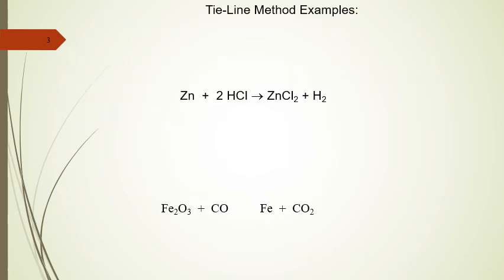We're now going to begin looking at a few different examples, and the first type of method we're going to use is the oxidation number change method or the tie line method. We have a reaction where zinc and hydrochloric acid produce zinc chloride and hydrogen gas — a single replacement reaction, which is always a redox process. Looking at our tie line, zinc is going to undergo oxidation. Elemental zinc has a charge of zero, and zinc in zinc chloride has a plus two charge. On a per atom basis, we're going to have a loss of two electrons per atom, giving a total of plus two since we have only one atom of zinc on the reactant side.